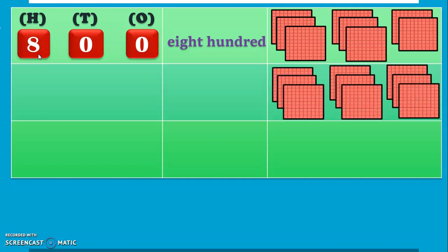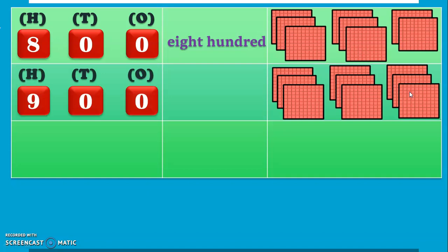The next number we are going to see is 9 blocks of 100: 1, 2, 3, 4, 5, 6, 7, 8, and 9. So we have 9 blocks of 100, making the number 900. That is 9, 0, 0, where 9 is in the 100s place, 0 is in the 10s place, and another 0 is in the 1s place. The number name for the same is Nine Hundred.